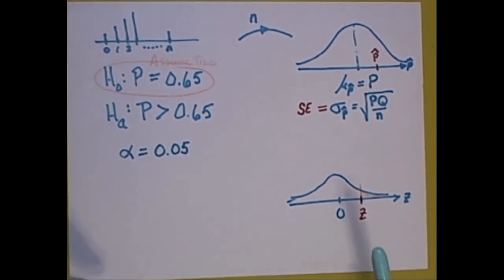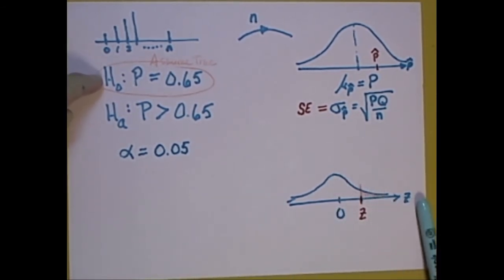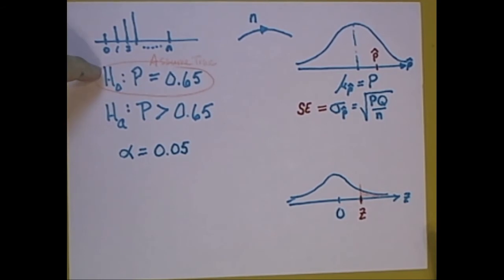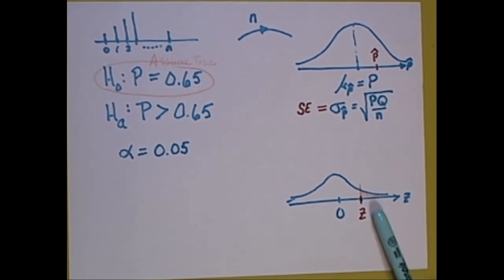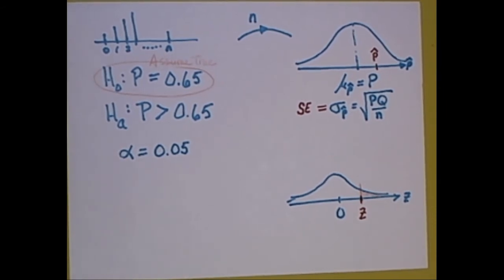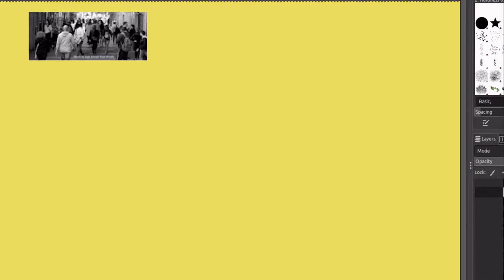If the alpha value is low, the null hypothesis must go. That means if that probability — that area — is less than 5%, we reject the null hypothesis, and there is statistical evidence supporting the alternative hypothesis. Otherwise, if that area is not less than alpha, we fail to reject the null hypothesis and do not have sufficient evidence to support the alternative hypothesis.